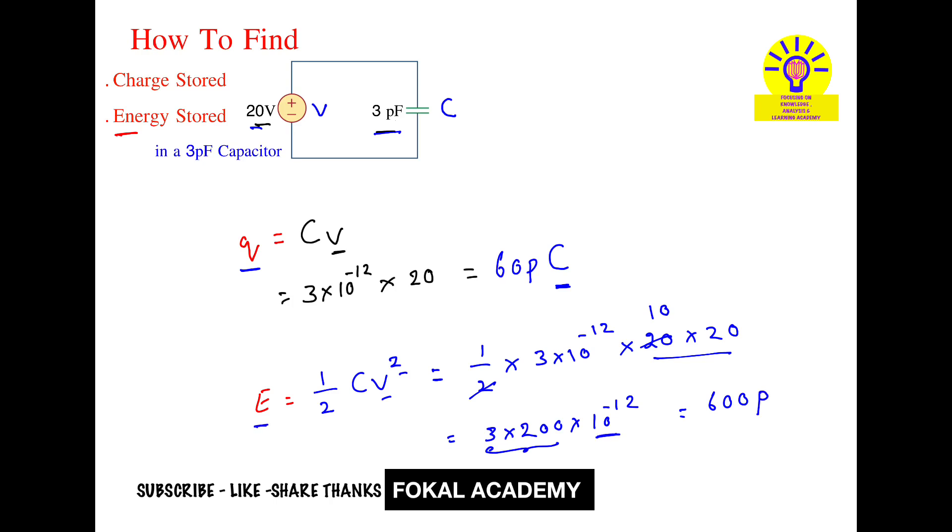And units of energy is joules, picojoules. So 600 picojoules is the energy stored in the given capacitor across 20 volts. And this is the process of simplification.